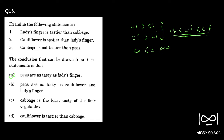Option B: peas are as tasty as cauliflower and lady's finger. We only know that cabbage is not tastier than peas — we don't have any information to compare the taste of peas with lady's finger and cauliflower. So that is also a wrong statement.